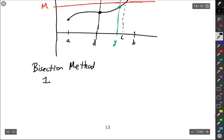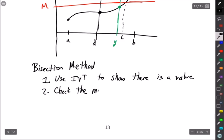So what's the method? One, use IVT to show there is a value. Whatever you want, it gives you a point that you want to look at. Check the midpoint of the interval.